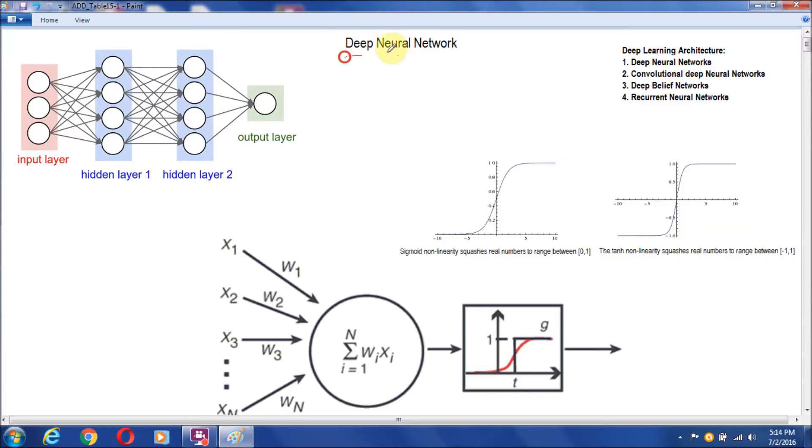Now let us start with the network structure of a deep neural network. Here we have taken a very simple structure which starts with an input layer, contains a first hidden layer, second hidden layer, and output layer.